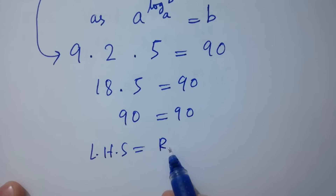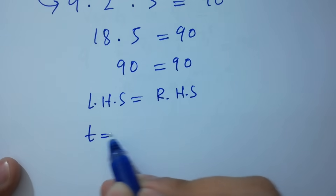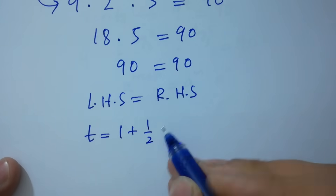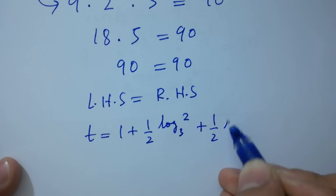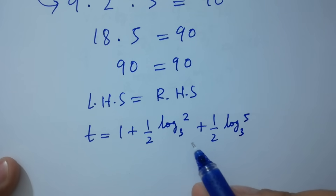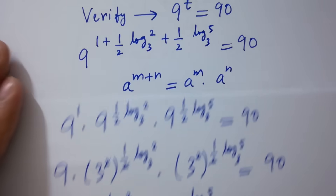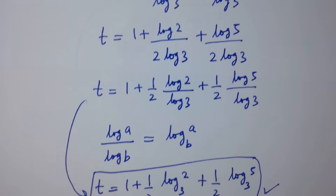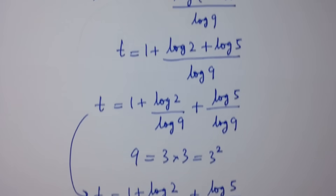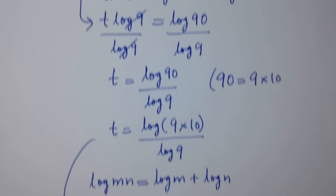Left hand side equals right hand side, which shows that t equals 1 plus half log 2 to the base 3 plus half log 5 to the base 3 satisfies the equation. Thanks for watching this video. Please subscribe to this channel to get notifications of new videos, and don't forget to share these videos with your classmates and friends so they can also benefit. You can also visit the playlist of this channel to learn more.